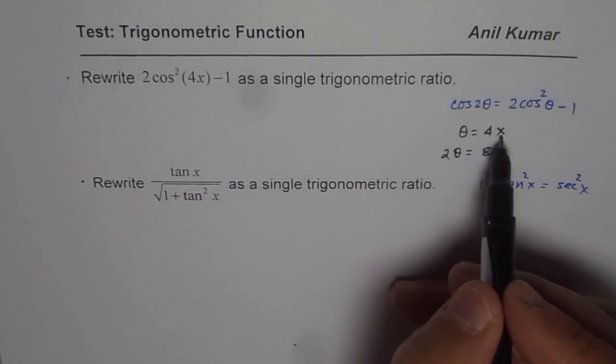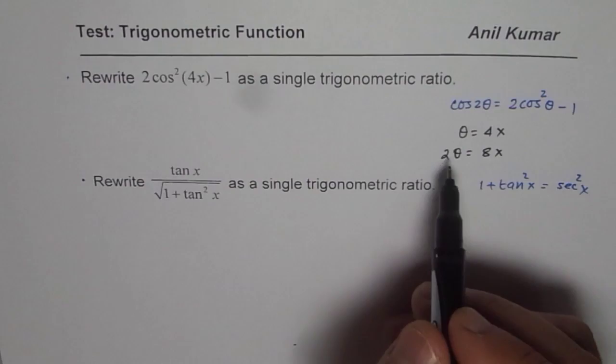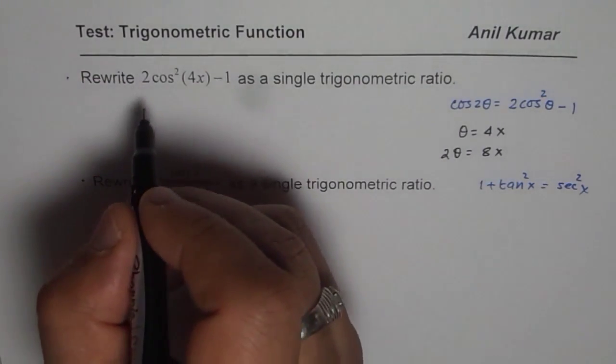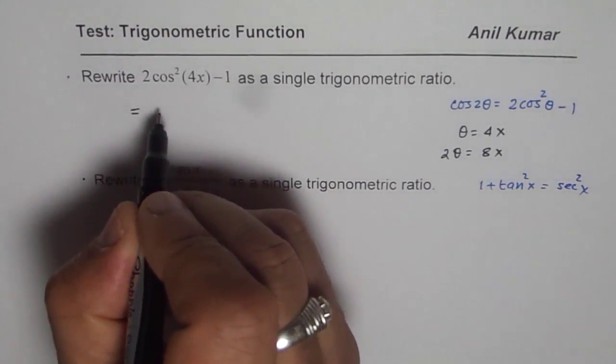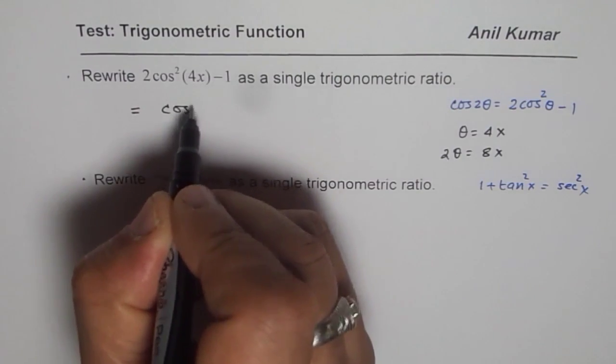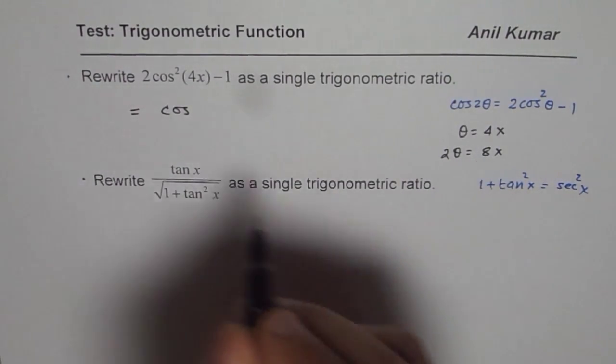Now, θ = 4x. That is the solution. 2θ is 8x. So we can write this as cos of 2θ, which is 8x.